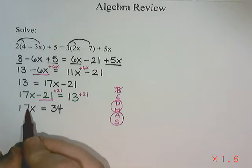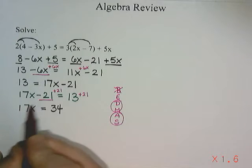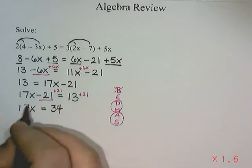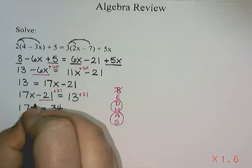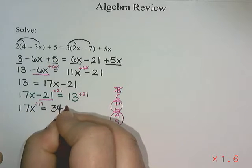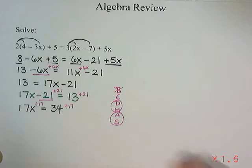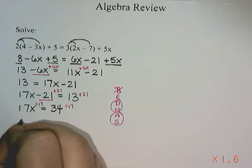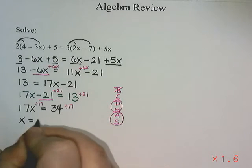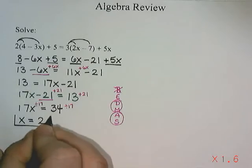So I now have multiplication, 17 times x. To move multiplication, we do the opposite and we divide. So we're going to divide both sides by 17. 34 divided by 17 gives me 2.